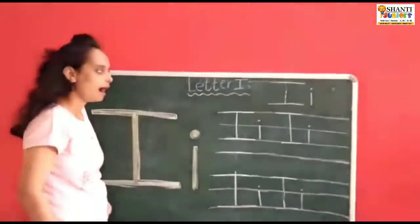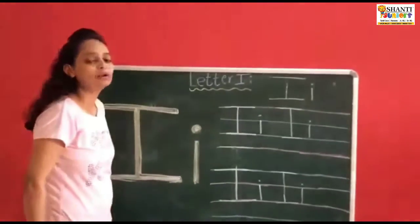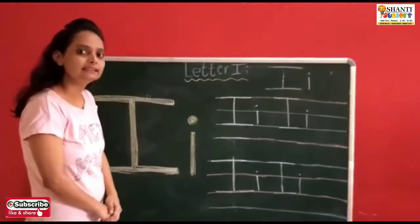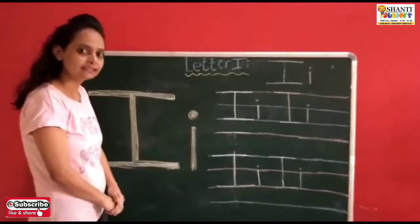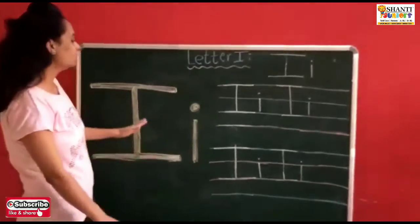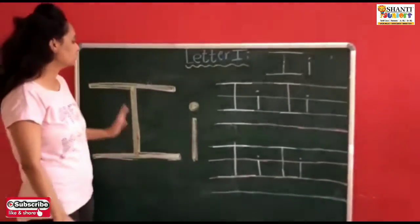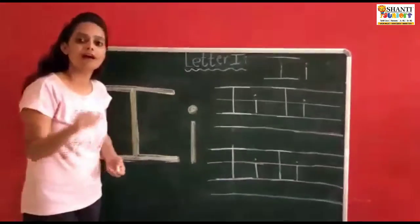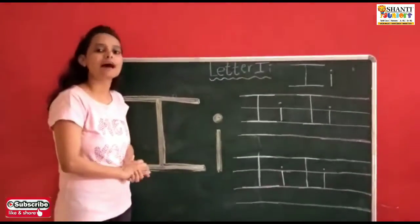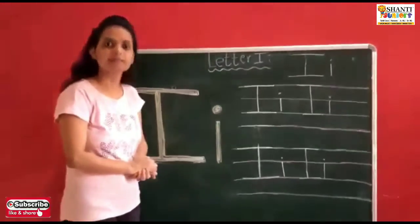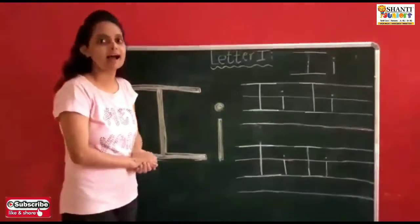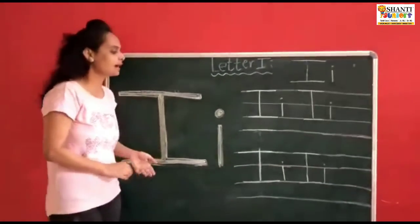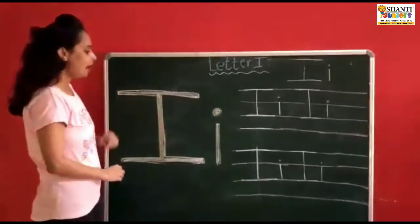So this is letter I. And how does letter I sound? E, E, E. The words that start with letter I are: I for iron, I for ice cream, I for eyes, I for igloo. All of these start with letter I.